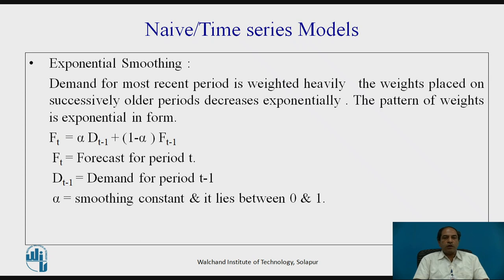The pattern of weights is exponential, and the general formula is: Ft = α × D(t-1) + (1 - α) × F(t-1), where Ft is the forecast for period t, D(t-1) is the actual demand for period t-1, and α is the smoothing constant, which lies between 0 and 1. The alpha value can range from 0.1, 0.2, 0.3, up to 0.6, depending on various factors and the knowledge and experience of the person using it, backed by statistical methods.